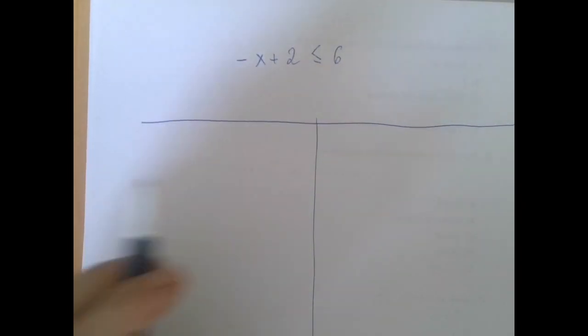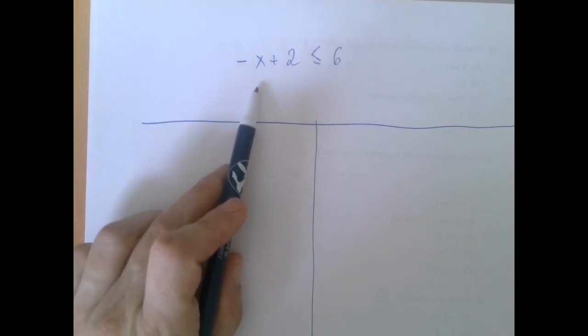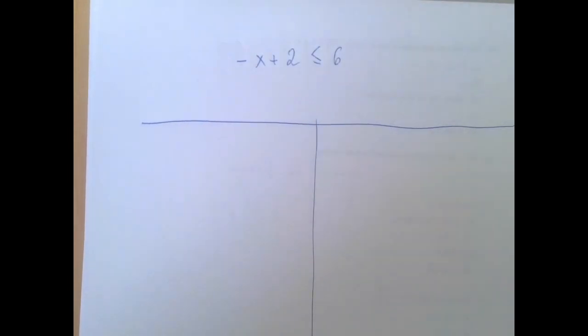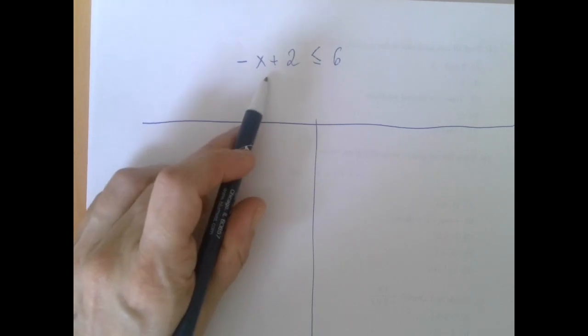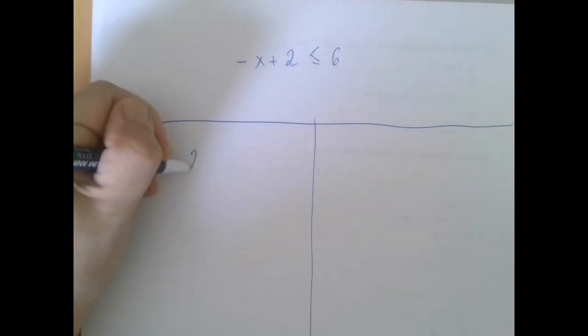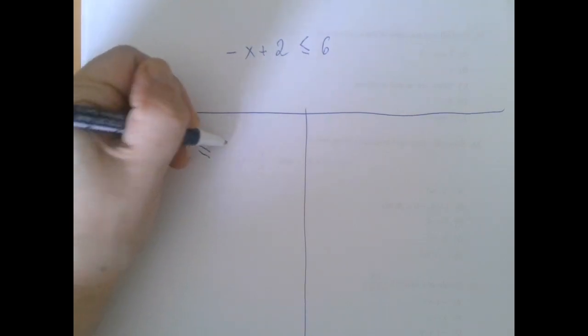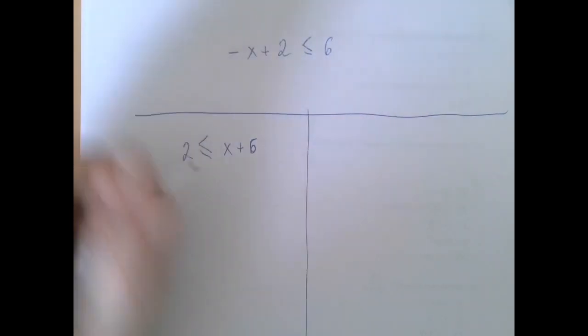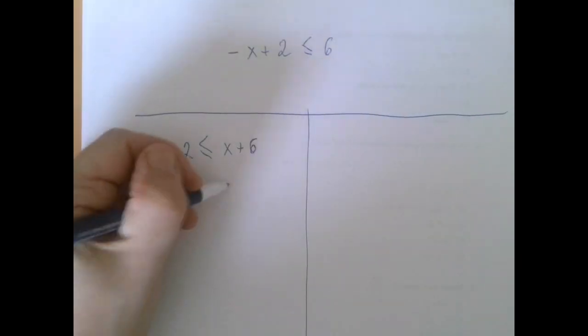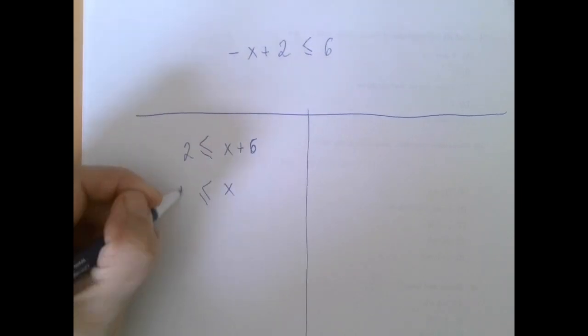So what I'm going to do is I say, well, let's just add X to both sides. I don't mind solving for it on the right hand side. So if we add X to both sides, we get 2 is less than equal than 6 plus X or X plus 6. And then as we said, we're going to solve for X here. X is greater than equal than negative 4.